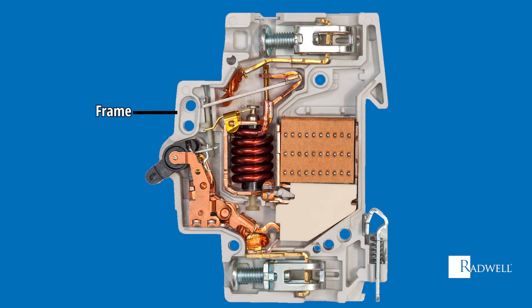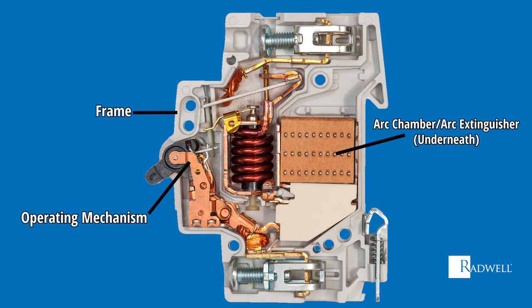Next is the operating mechanism. This component opens and closes the contacts, which is basically turning the circuit on and off. When an arc is created by the interruption of the circuit breaker, it will need to be extinguished. That function is carried out by the arc extinguisher.